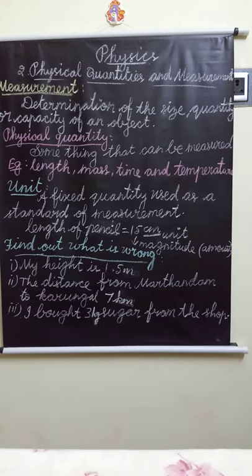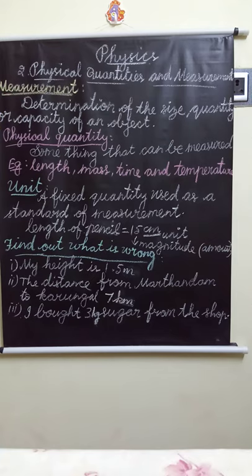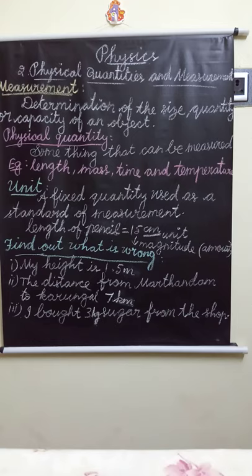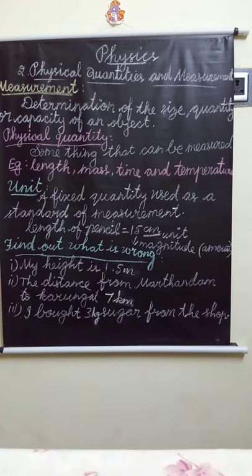Which topics did we study? Measurement, physical quantity, and unit. What is measurement? The determination of the size, quantity or capacity of an object. What is physical quantity? Something that can be measured. Physical quantities include length, mass, time and temperature. What is a unit? A fixed quantity used as a standard of measurement.